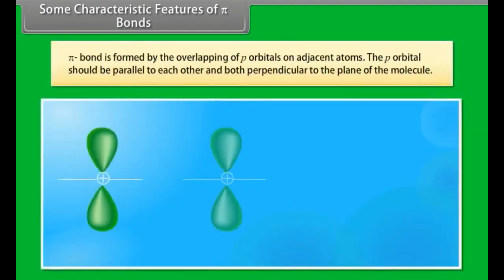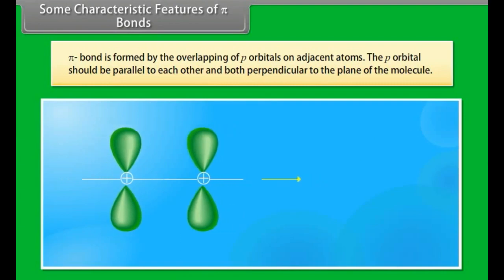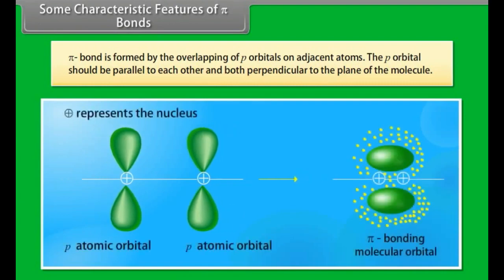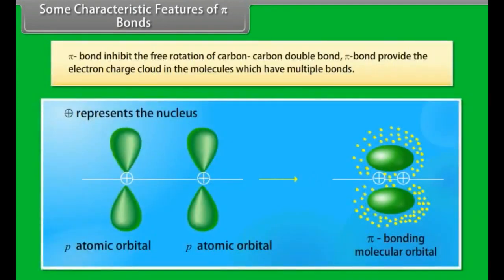Some characteristic features of pi bonds: a pi bond is formed by the overlapping of p orbitals on adjacent atoms. The p orbitals should be parallel to each other and both perpendicular to the plane of the molecule. Pi bond inhibits the free rotation of carbon-carbon double bonds. Pi bond provides the electron charge cloud in molecules which have multiple bonds.